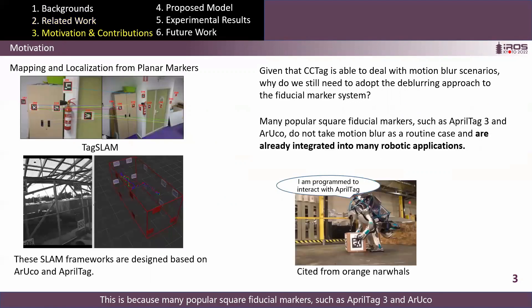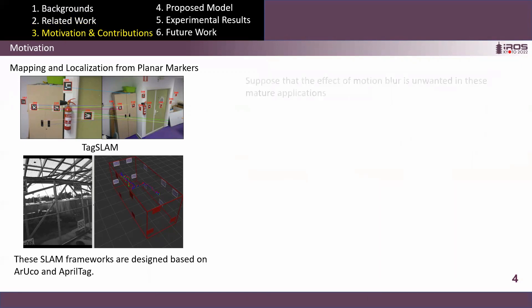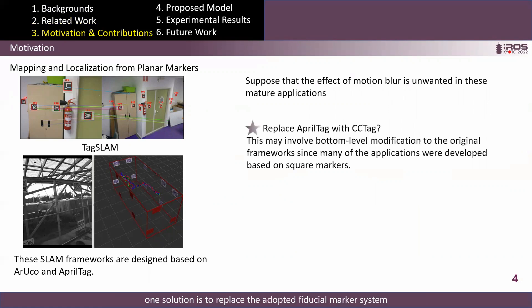This is because many popular square fiducial markers, such as AprilTag3 and ArUco, do not take motion blur as a routine case, and they are already integrated into many robotic applications. Suppose that the effect of motion blur is unwanted in these major applications. One solution is to replace the adopted fiducial marker system with a system that considers motion blur. However, this may involve bottom-level modifications to the original frameworks, since many of the applications were developed based on square markers.